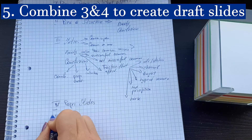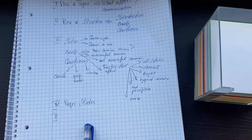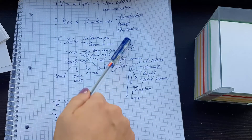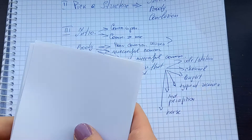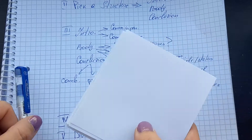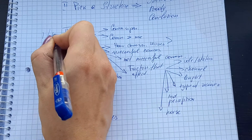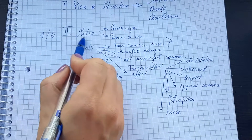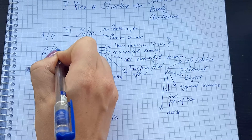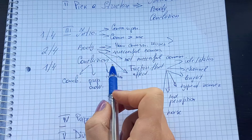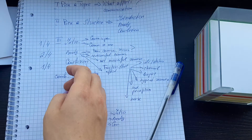In the fifth step, we combine the previous two steps and divide our paper slides based on the structure we made before. There is no right or wrong here, but as a rule of thumb, I dedicate one fourth of the slides to the intro, one fourth to the conclusion, and the remaining two fourths to the body. You can actually divide them physically — so these five, for example, are for the intro.